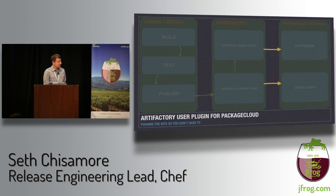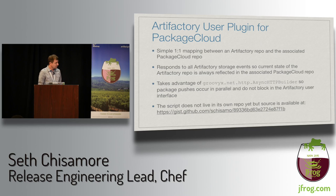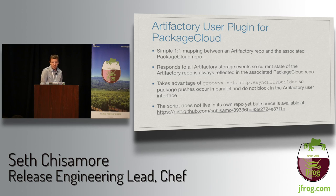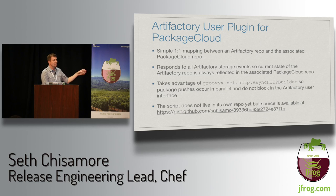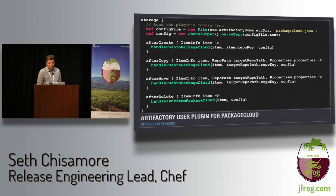Let's talk about how we get things out to our external systems — specifically the Artifactory user plugin for Package Cloud. This script provides a simple one-to-one mapping between an Artifactory repo and the associated Package Cloud repo. It responds to all storage events, so the current state of the Artifactory repo is always in sync with the external system. It takes advantage of the async HTTP builder so package pushes occur in parallel and don't block the UI. The script is available on GitHub.